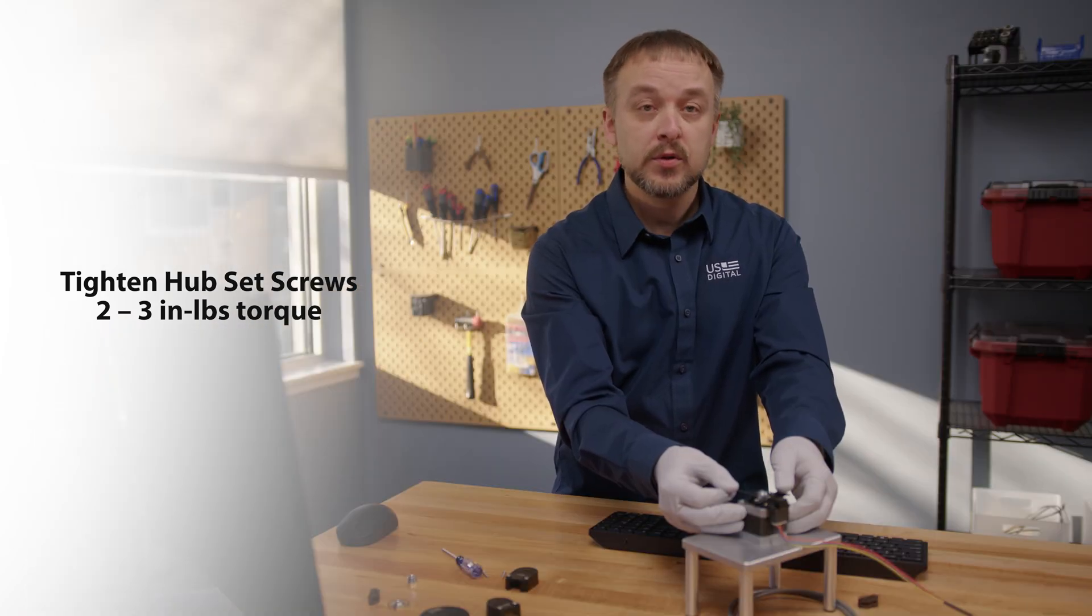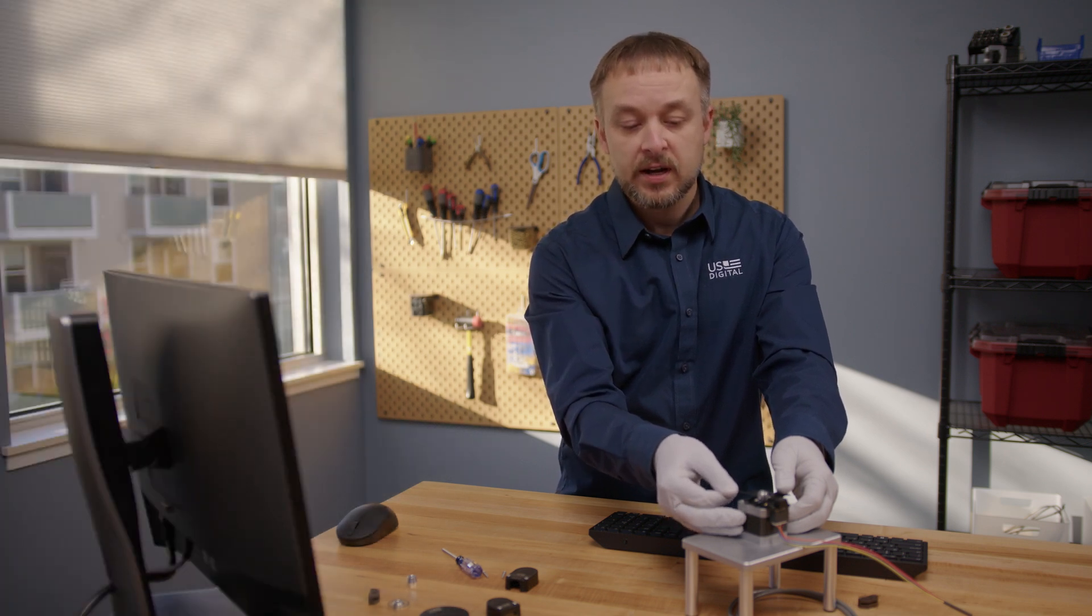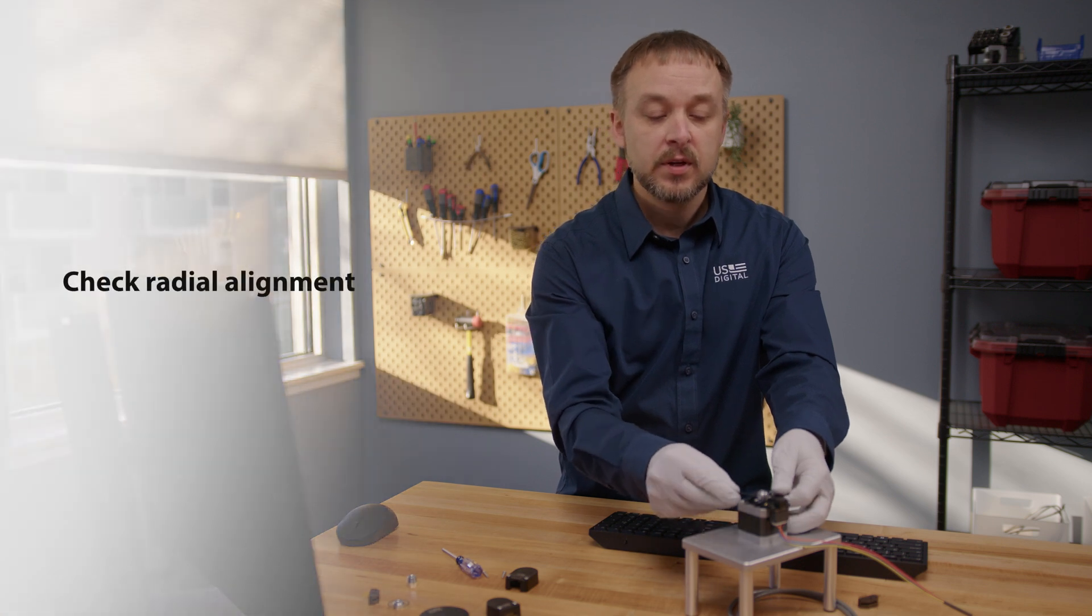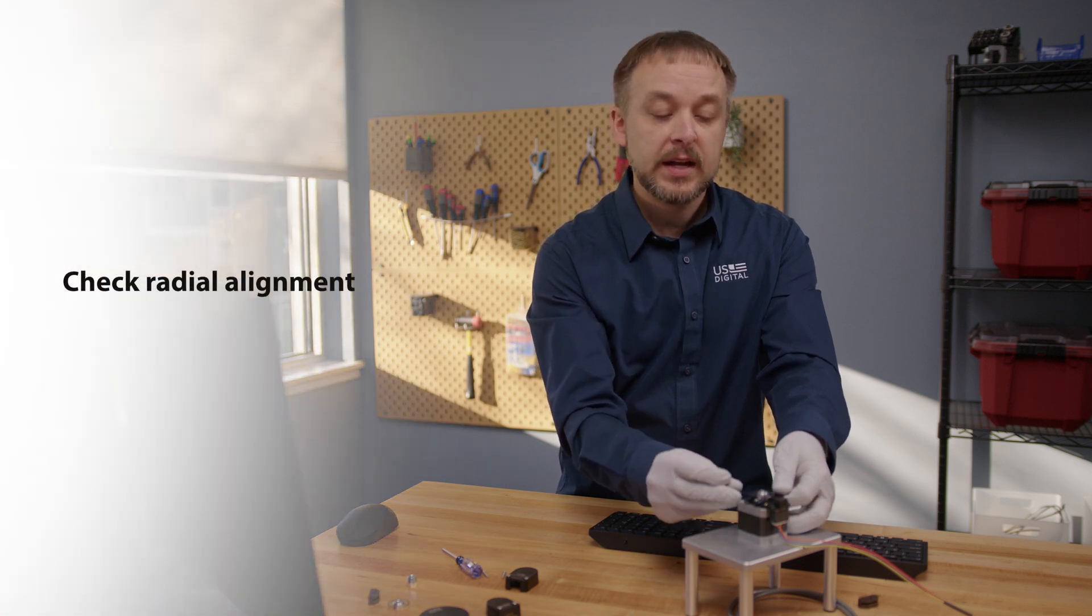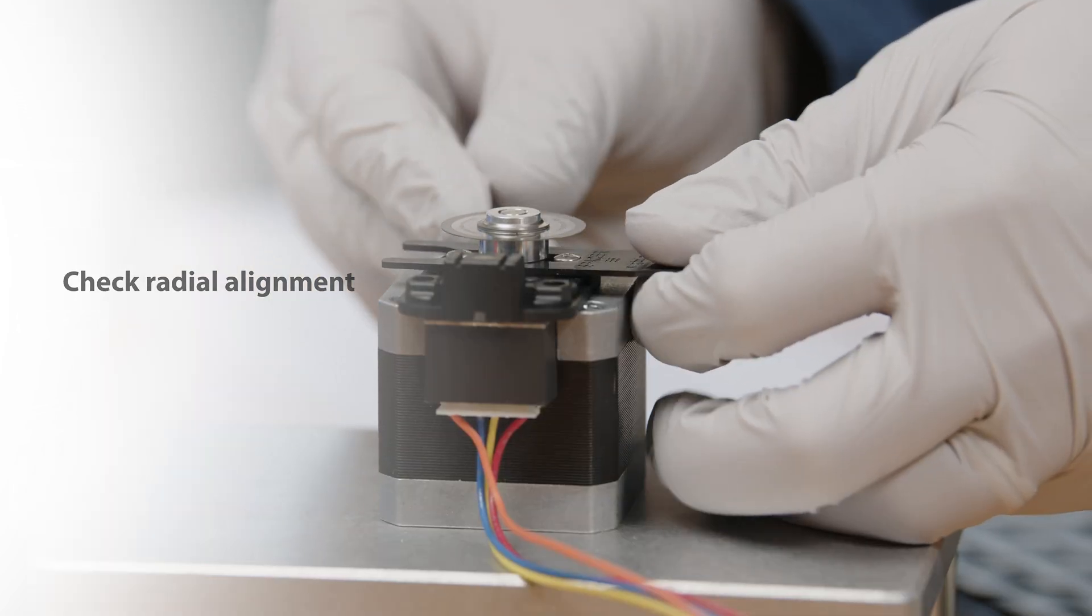This may have been the only problem. So you could reassemble and retest at this point, but we'll go on to the next step to show you what else we could check as well. So we're going to now check the radial alignment or the centering of the base. So we're going to remove this disk completely.